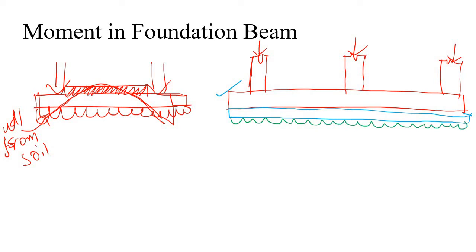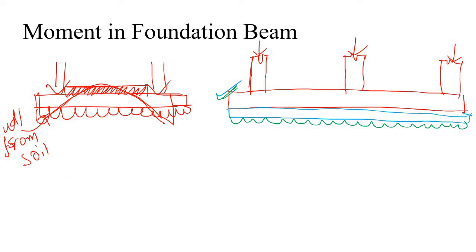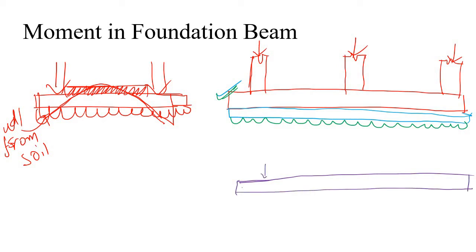What is the bending moment diagram for this foundation beam? Try to construct it by yourself. The bending moment diagram for the foundation beam looks something like this — with the tension zone indicating that cracking will occur at the bottom in the support zones and at the bottom in those crack zones.